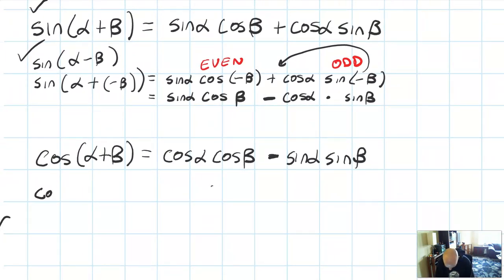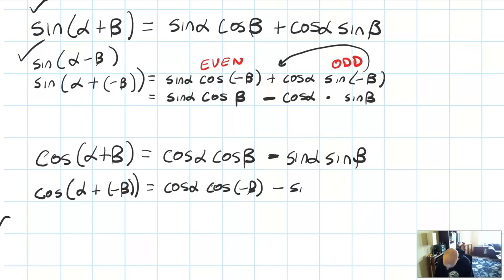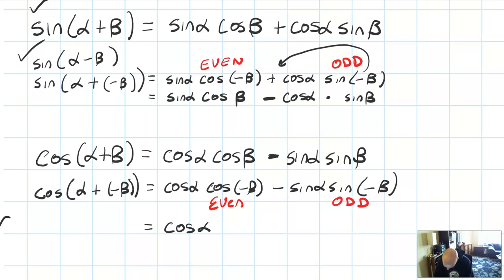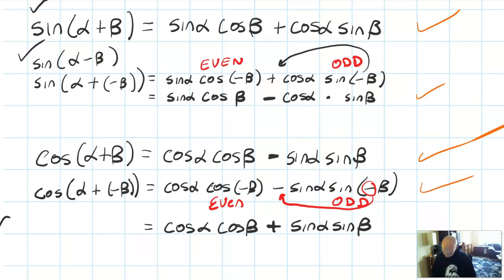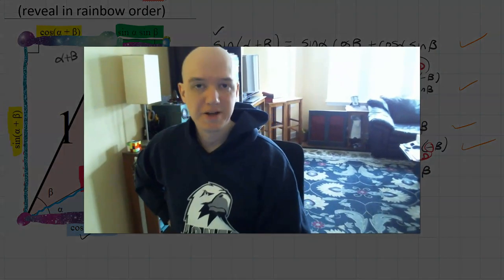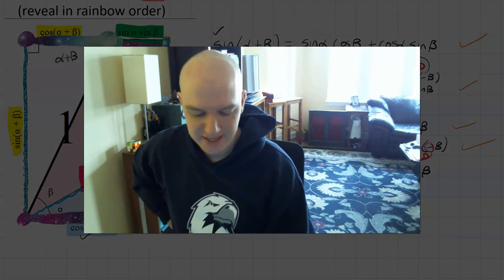Let's check cosine too. Cosine of alpha plus negative beta equals cosine alpha times cosine of negative b minus sine alpha times sine of negative b. Cosine is even and sine is odd, so this simplifies to cosine alpha cosine beta plus sine alpha sine beta — because the oddness of the function means we can bring that negative out front, and two negatives make a plus. So there are the four identities. I'm going to clip this video here and we'll go to the next video where we'll do a bunch of examples from section 5.2.